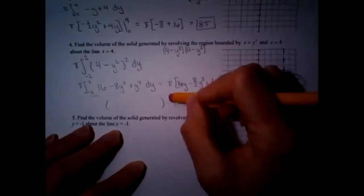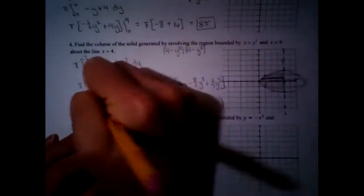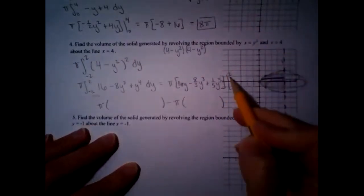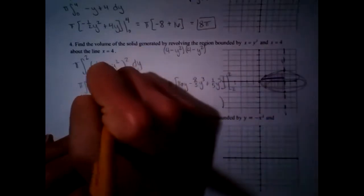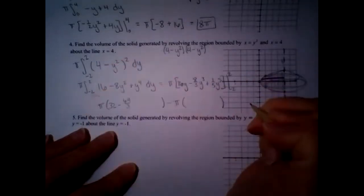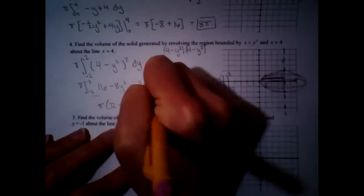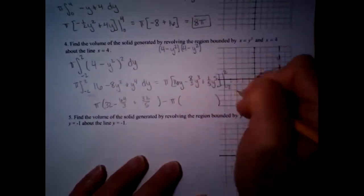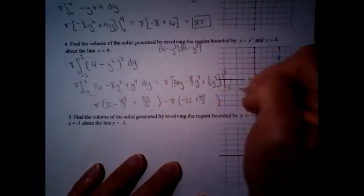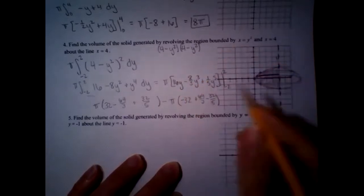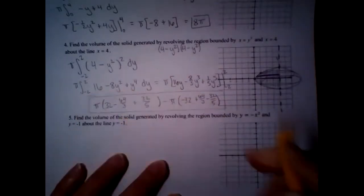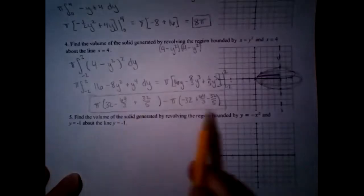Both expressions need a π out front. We have to do upper boundary minus lower boundary — the lower boundary is not zero this time. Plugging in positive 2: 32 − 64/3 + 32/5. Plugging in negative 2: −32 + 64/3 − 32/5. For free response, that's a perfectly fine answer.